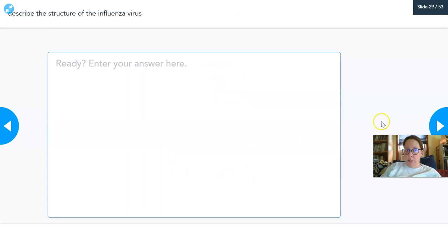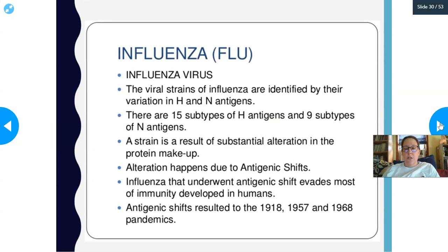Student activity: describe the structure of the influenza virus. Note whether it is naked or enveloped, the type of genetic material, the capsid shape, and as much detail as possible. The viral strains of influenza are identified by variations in the H and N antigens on its envelope.